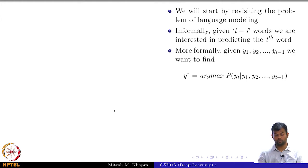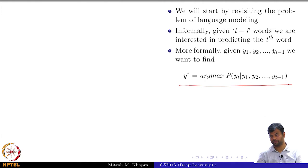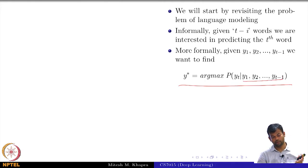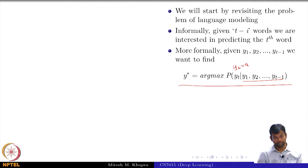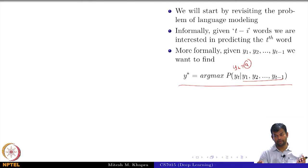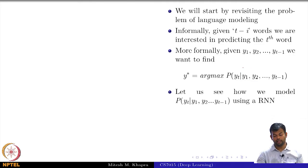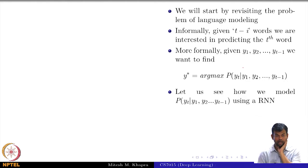More formally, we are interested in: given a sequence of t minus 1 words, we want to find out the value of y at time step t that maximizes this probability — that is what the argmax equation means. Now we will try to see how to model this using an RNN.